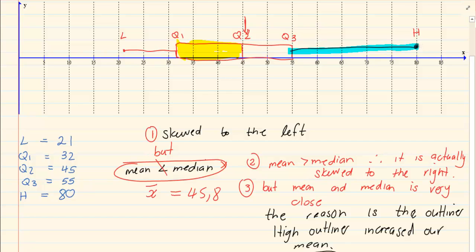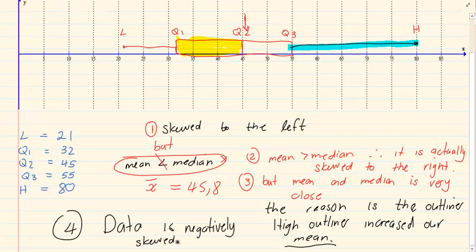Because the outlier actually brought up my mean. I still believe that the data is negatively skewed. So, when you are looking at the data, you need to mention outliers. It is always a given mark that we have a high outlier. Next, you need to tell them that it is skewed to the left or negatively skewed.